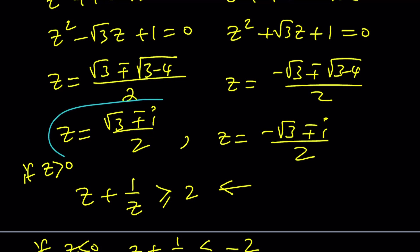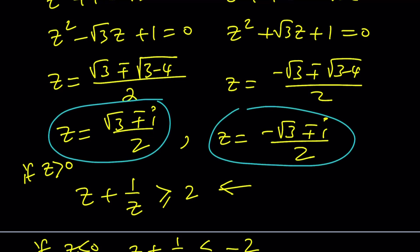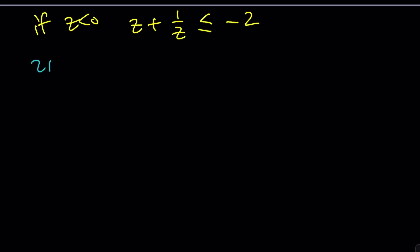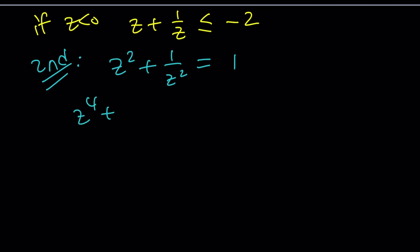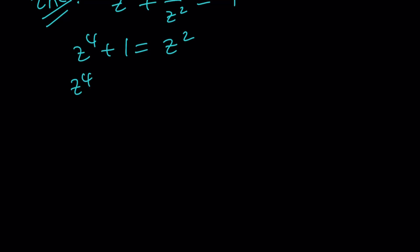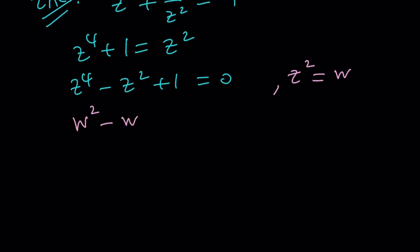Now let's look at the second method. We start again with z squared plus one over z squared equals one. We go ahead and make a common denominator — multiply everything by z squared. Then put everything on the same side and do the substitution z² = w. This gives us w² − w + 1 = 0.